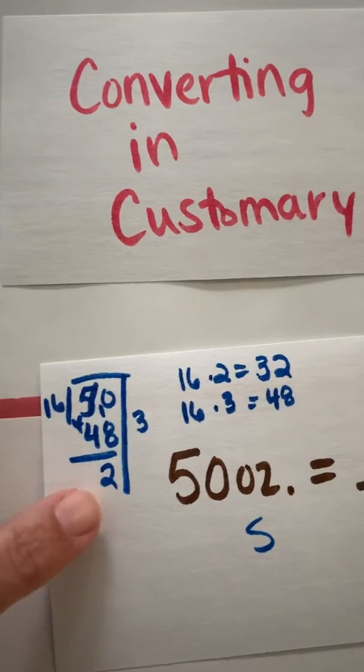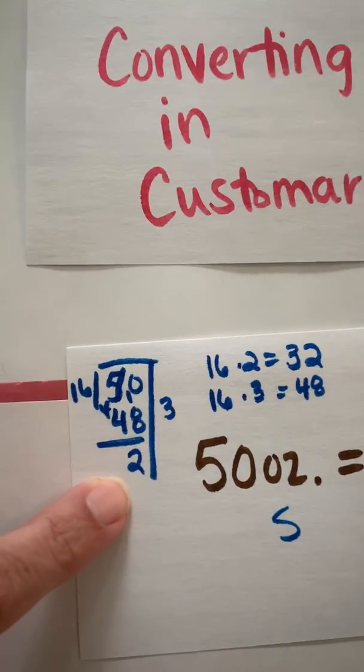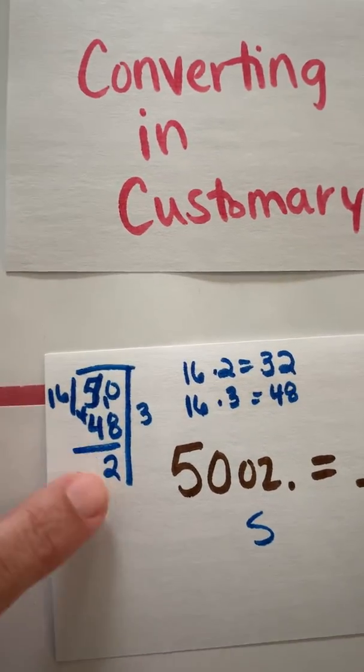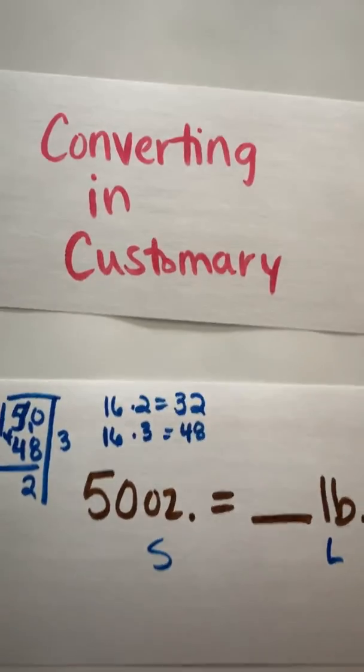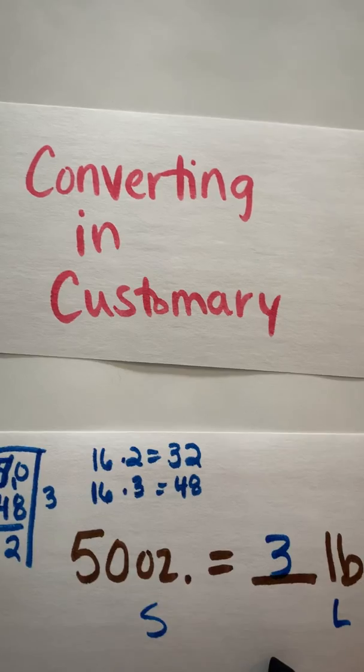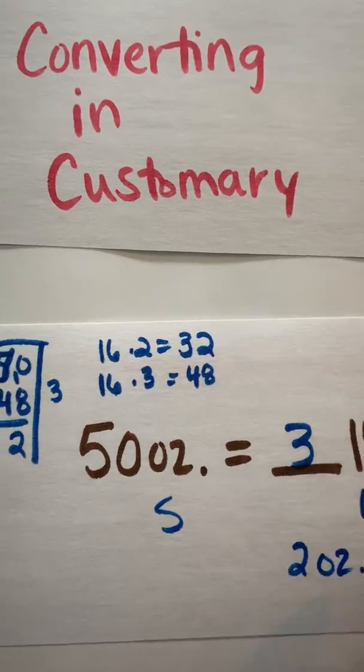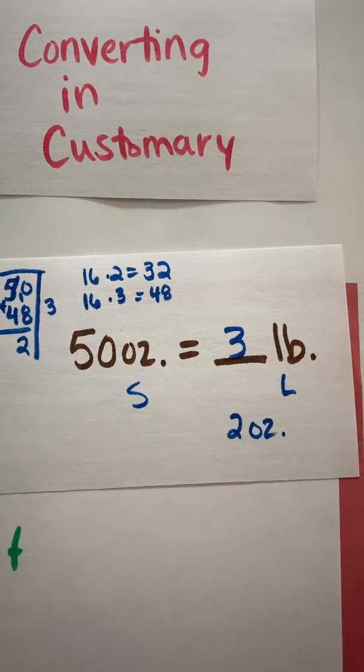Now I know I'm done because once again, I know I have a remainder if it's less than my divisor because I can't get another group of 16 out of there. So this is going to be 3 pounds with 2 ounces left over.